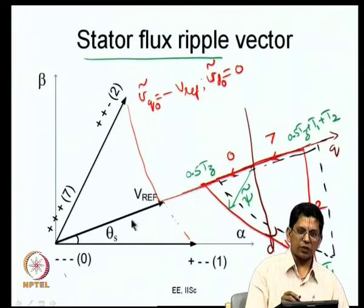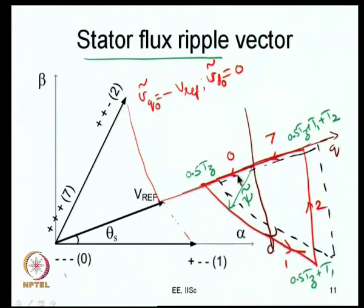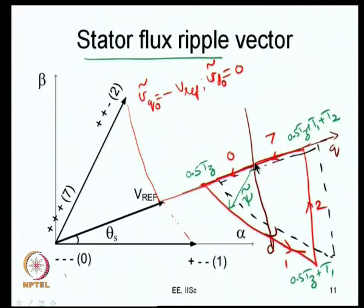When you apply the null vector the error is minus V_reference. When you apply null vector 0 to 7, the error voltage vector is minus V_ref, and as you integrate it, it grows in that direction. At 0.5·T_z you switch from the zero vector to active vector 1, so the error voltage vector changes and the tip of the stator flux ripple vector starts moving parallel to this new error voltage vector. This continues until 0.5·T_z + T1, at which point you switch from active vector 1 to active vector 2, and the tip moves in a new direction. Finally, at 0.5·T_z + T1 + T2 you apply the last zero state, and by the end of the sub-cycle the tip of the flux ripple vector returns to zero. This trajectory has a certain RMS value proportional to the current ripple.